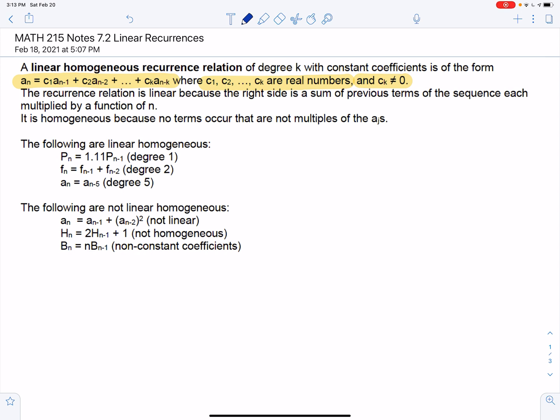Just some examples of what this sequence is and what it isn't. All of these are linear homogeneous with constant coefficients. As you can see, p_n equals 1.11 p_{n-1}, it's a constant coefficient. This one has degree 1. We have the Fibonacci sequence, which is degree 2. And we have a_n equals a_{n-5}. The highest number you subtract from n on the right-hand side is basically the degree. So this one is degree 5.